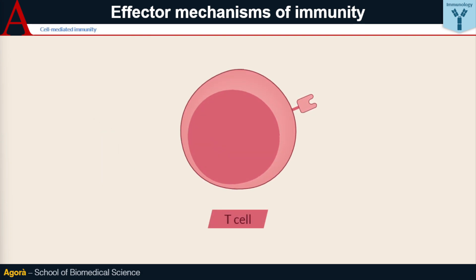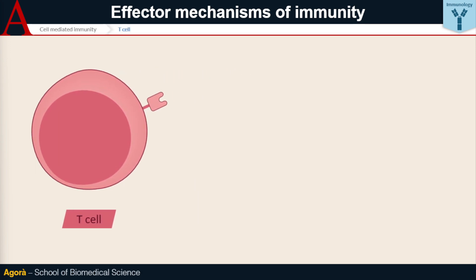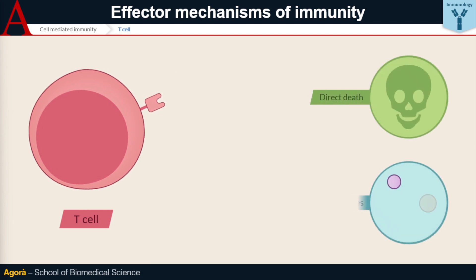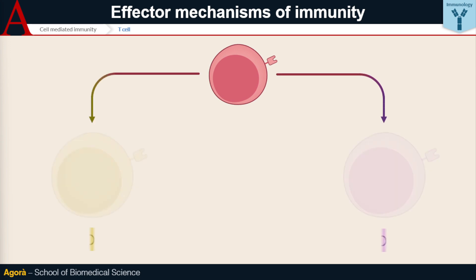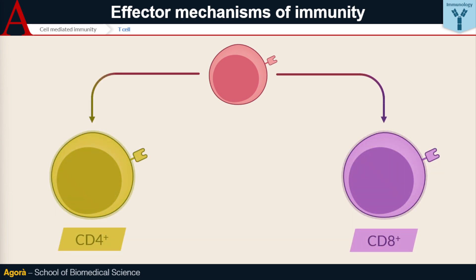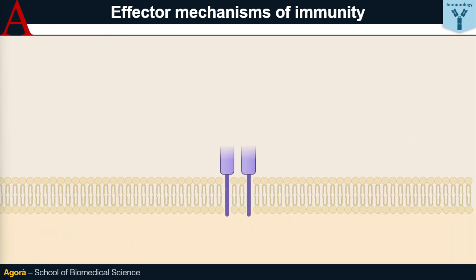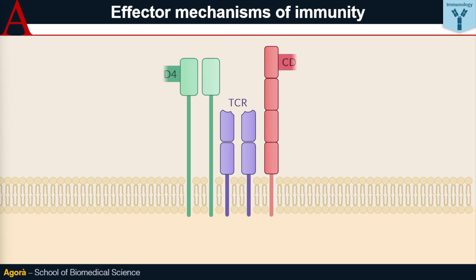Unlike B cells, T cells intervene first-hand in immune responses, either by directly inducing the death of altered cells, or by producing cytokines that support other immune elements in their function. T cells can be divided into two major families: CD4-plus and CD8-plus. CD4 and CD8 are two surface proteins involved in the interaction between T cells and other cells, in addition to the function performed by the TCR. They are therefore also called co-receptors.